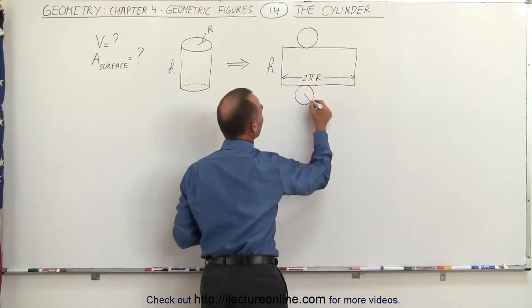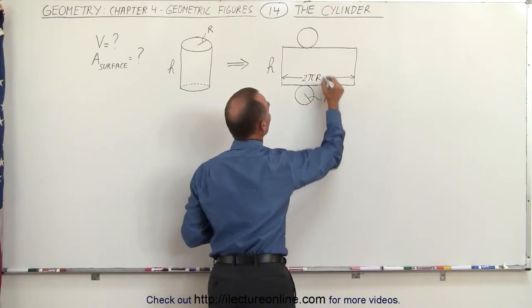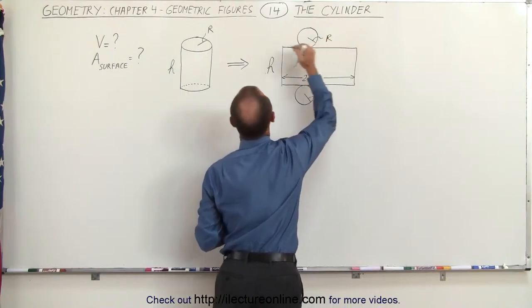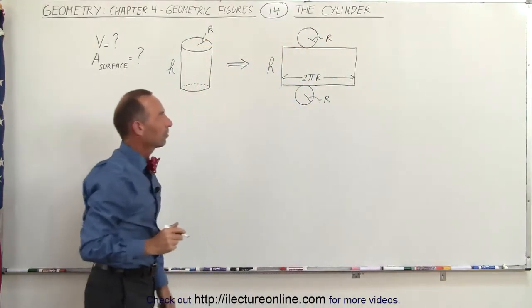And then this here would be the little circle with radius r. And here this would be a circle with radius r which would be the top and the bottom portion of the cylinder.